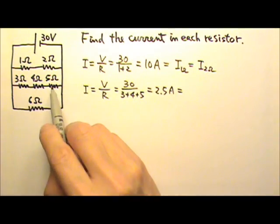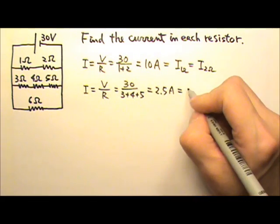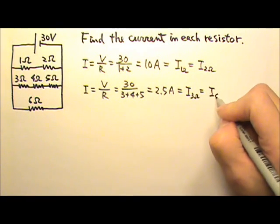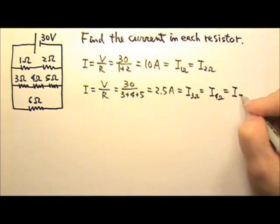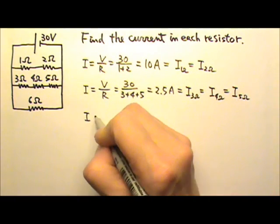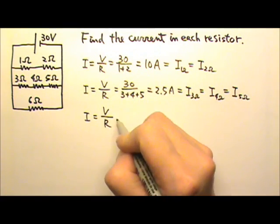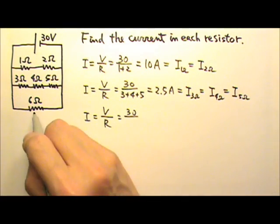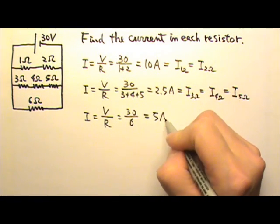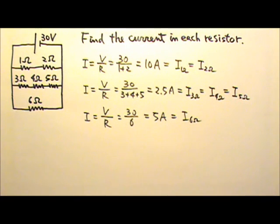Because again they are in series, they all get the same current — 2.5 amps through the 3 ohms, 4 ohms, and 5 ohms. The last segment also gets 30 volts. So the current is V over R, 30 divided by 6. So this resistor gets 5 amps. This is the current through the 6 ohms. And that's it.